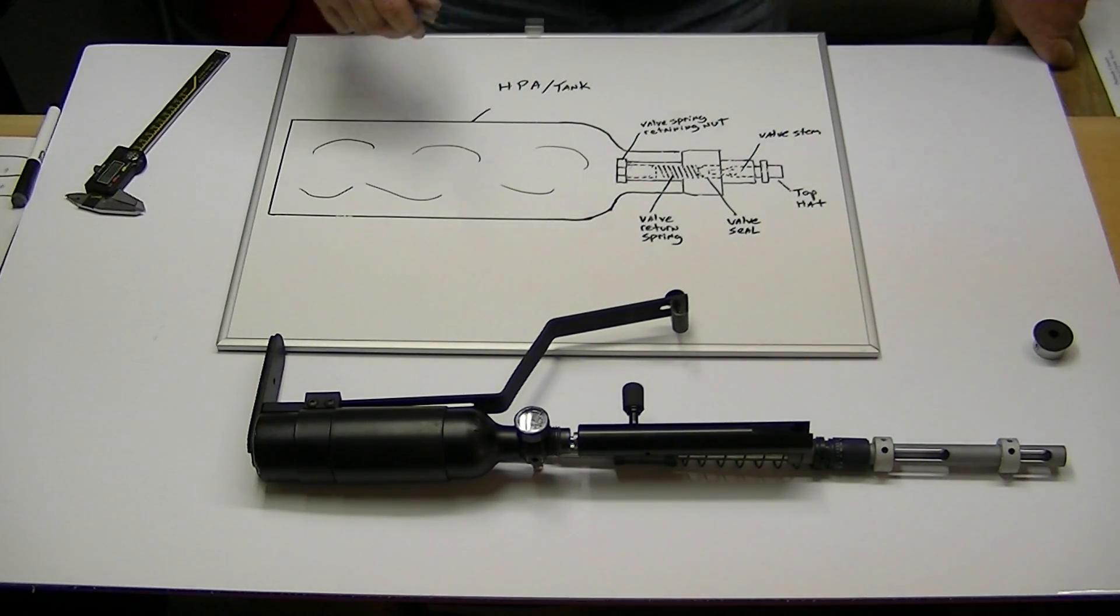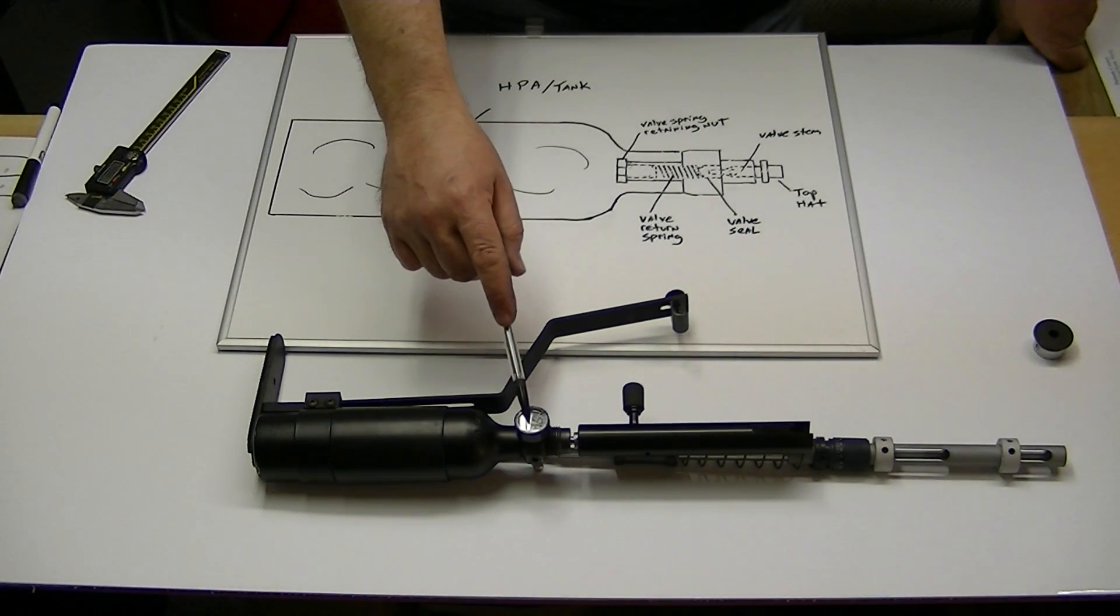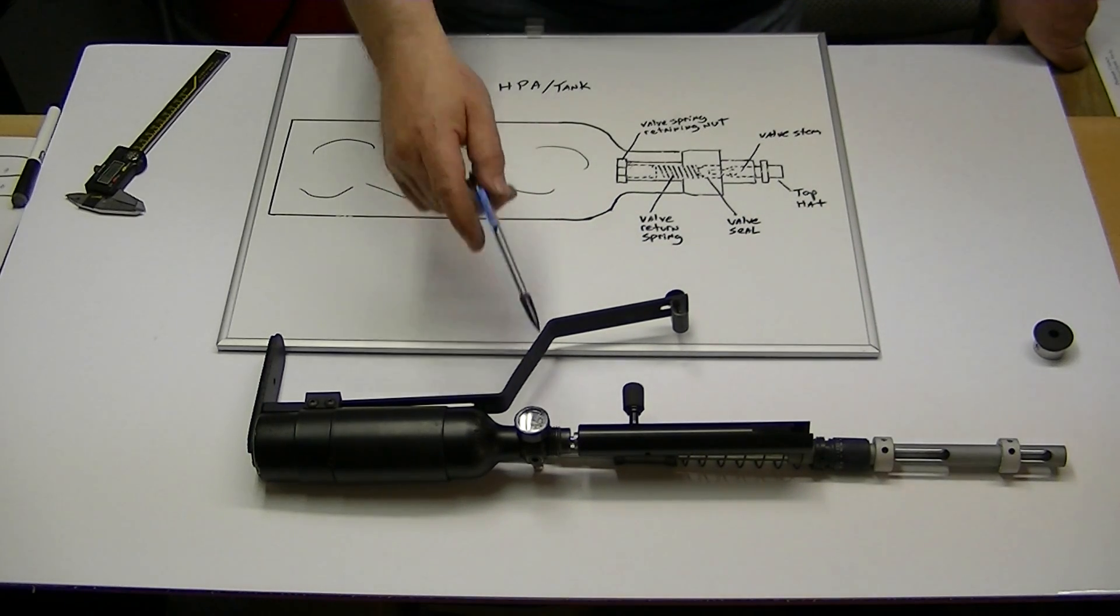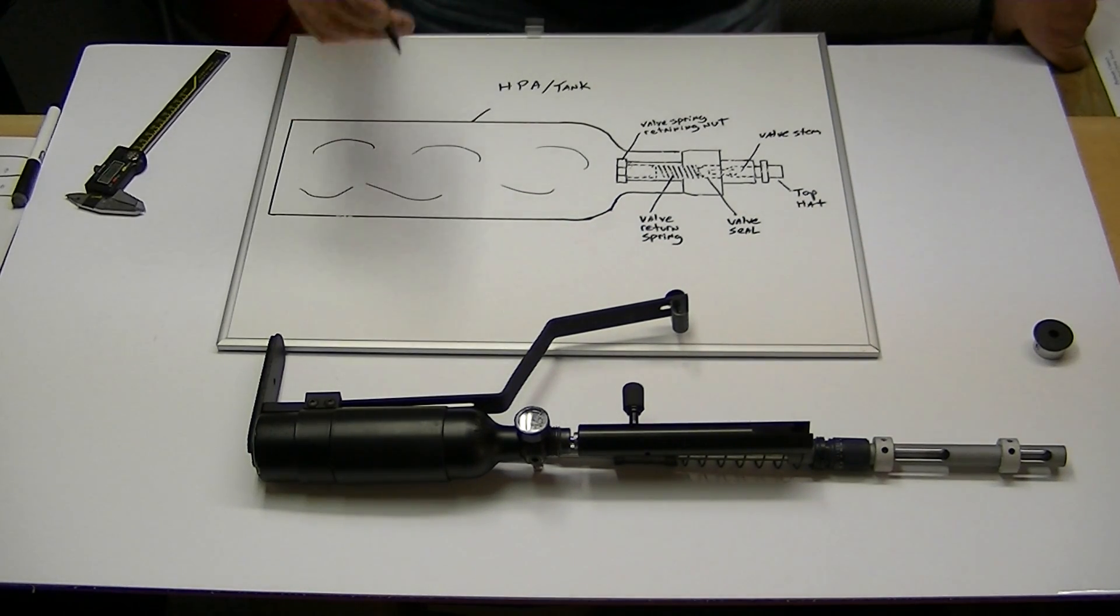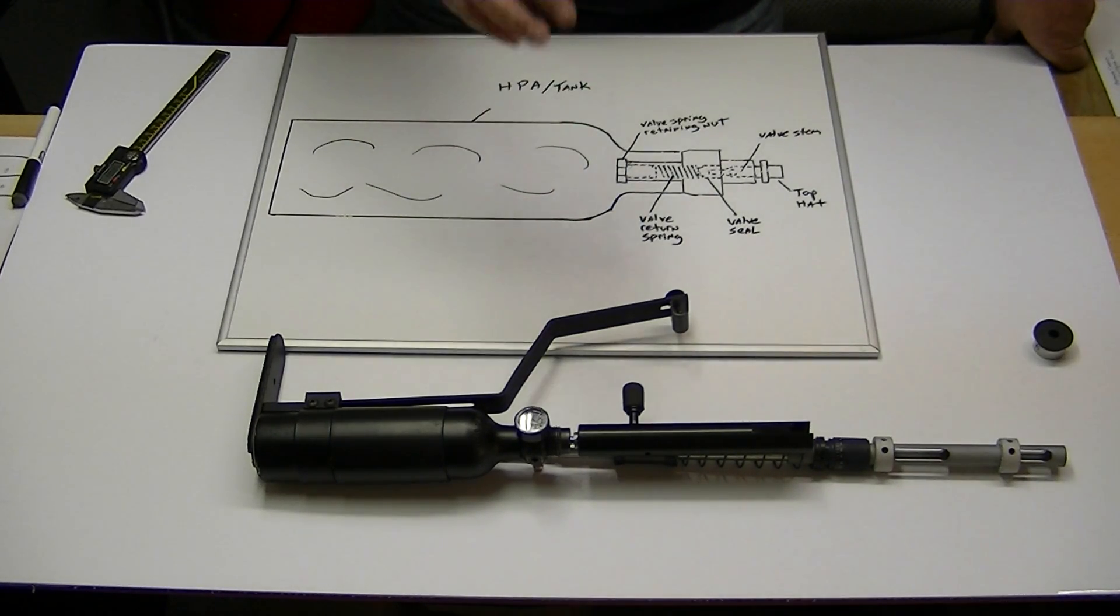Now, once you have it dialed in and you know what your max fill pressure is for usable shots and you know where to stop and refill again, at that point, you can try to fine tune this thing a little bit better by adjusting two different things.